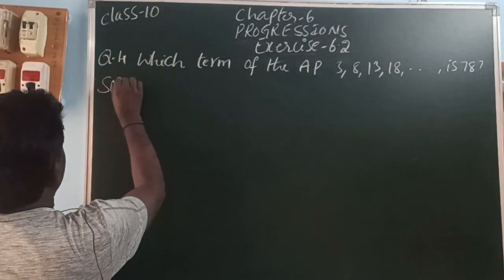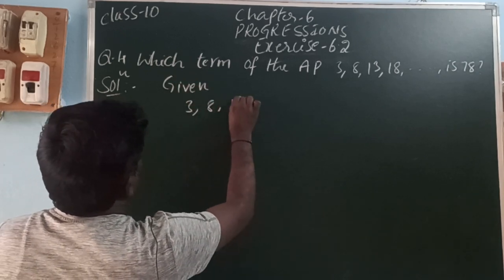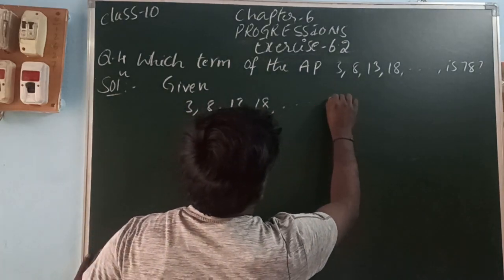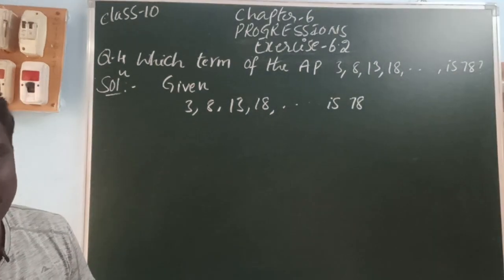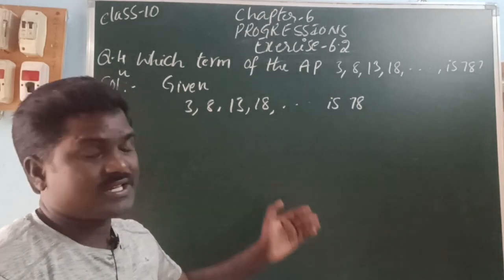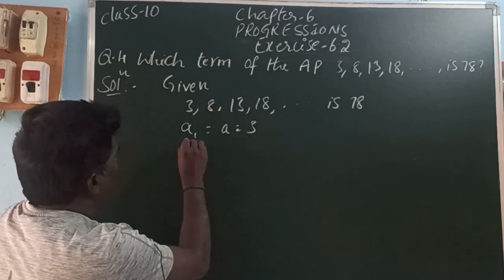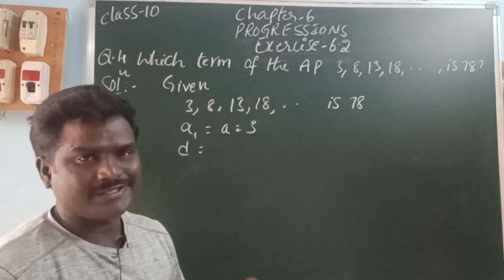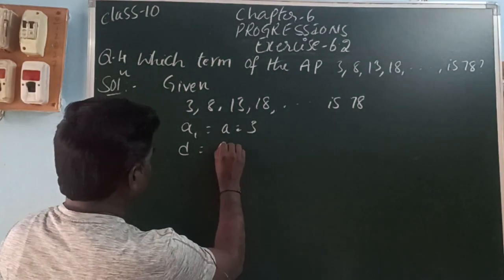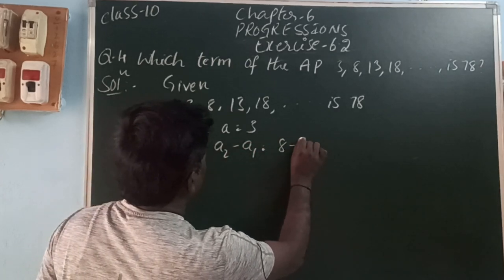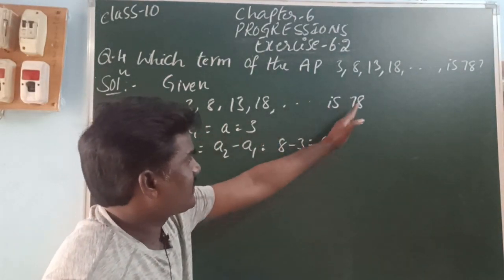Here given 3, 8, 13, 18 and so on. This is the AP. They are asking that 78 is which term in the given AP. So how you can find by using nth term? Before finding the nth term, first find the first term and common difference. Here the first term A1 is equal to A is equal to 3. Common difference means what? The difference between two consecutive terms — we get a constant, that constant is called common difference. Here A2 minus A1, 8 minus 3, that is equal to 5.